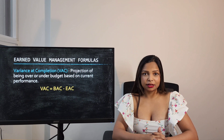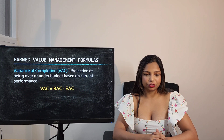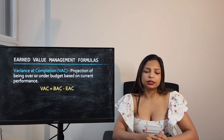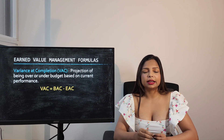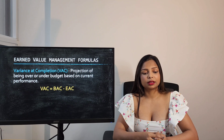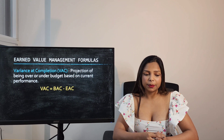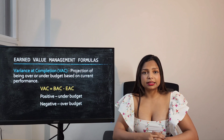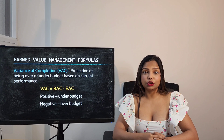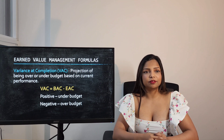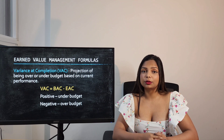Variance at Completion, or VAC, shows the projection of being over or under budget based on the current performance of the project. The formula is Budget at Completion minus Estimate at Completion. A positive value means your project is under budget; a negative value means the project is over budget.